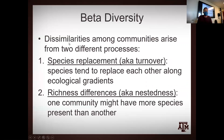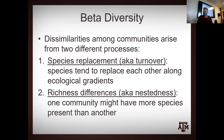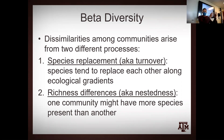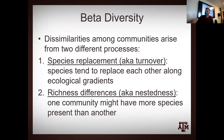Dissimilarities among communities arise from two different processes that are core to beta diversity. The first is species replacement, sometimes called turnover - species tend to replace each other along ecological gradients. In the fish world, species occurring in headwater streams are replaced by other species as you move down to a large river, so some species don't occur at one part of the gradient while others begin to occur.